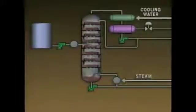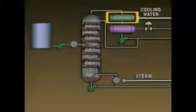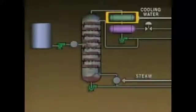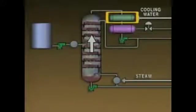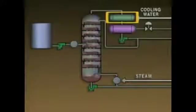Another problem that may affect the tower's differential pressure is a decrease in condenser efficiency. If the condenser's tubes are plugged or there's not enough cooling water flowing through the condenser, the condenser's pressure will increase. As a result, the flow of vapors from the tower to the condenser will decrease, and so will the vapor flow up the tower. This means that the tower top pressure will increase and the differential pressure will decrease.